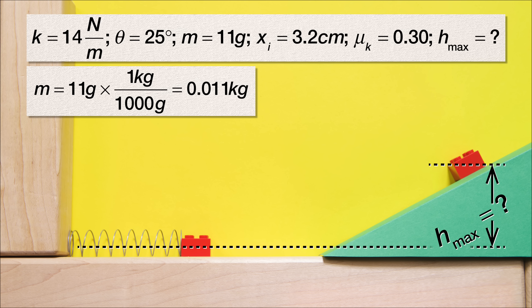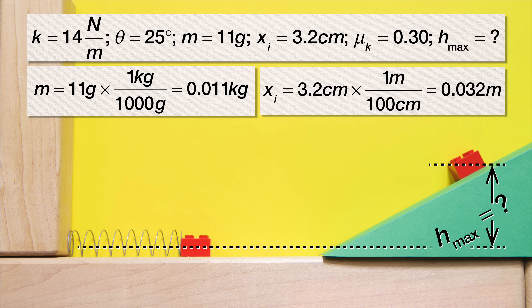We also need to convert the initial compression of the spring to meters. So x initial equals 3.2 centimeters times 1 meter divided by 100 centimeters, or 0.032 meters.